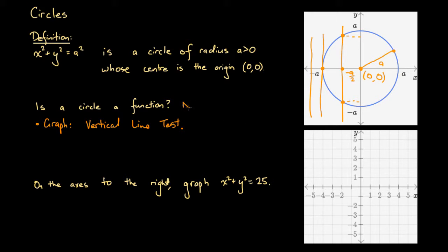Consequently, this is not a function. Is the circle a function? No, because we can find at least one x value where there are two associated y values. That's one way we can determine it's not a function.